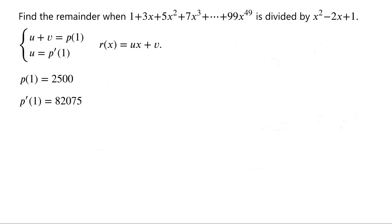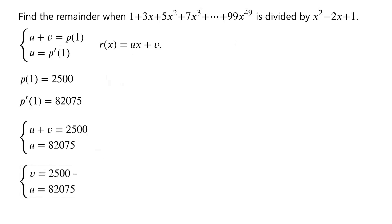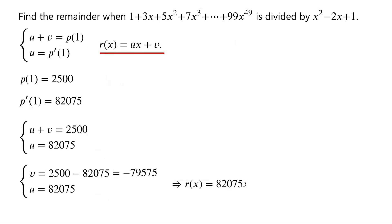We have worked out P of 1 and P dash of 1. The system of equations now becomes: u plus v equals 2,500, and u equals 82,075. So v equals 2,500 minus 82,075, which equals negative 79,575. As R of x equals ux plus v, the remainder equals 82,075 times x minus 79,575. That's the answer.